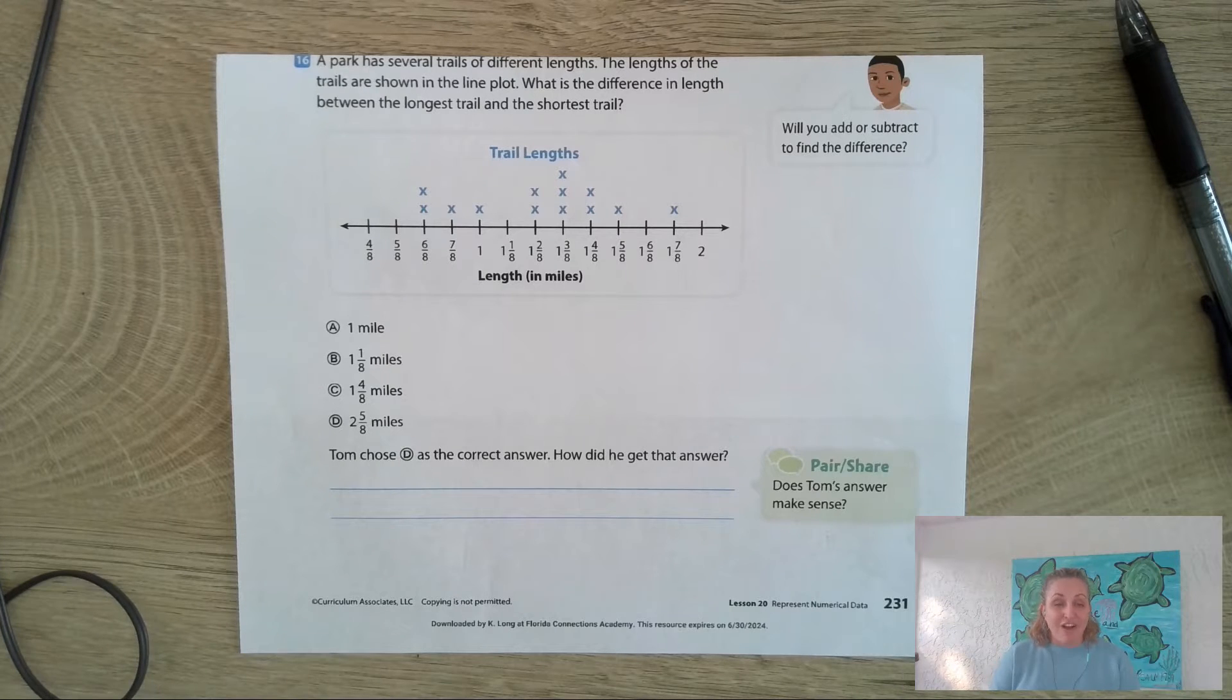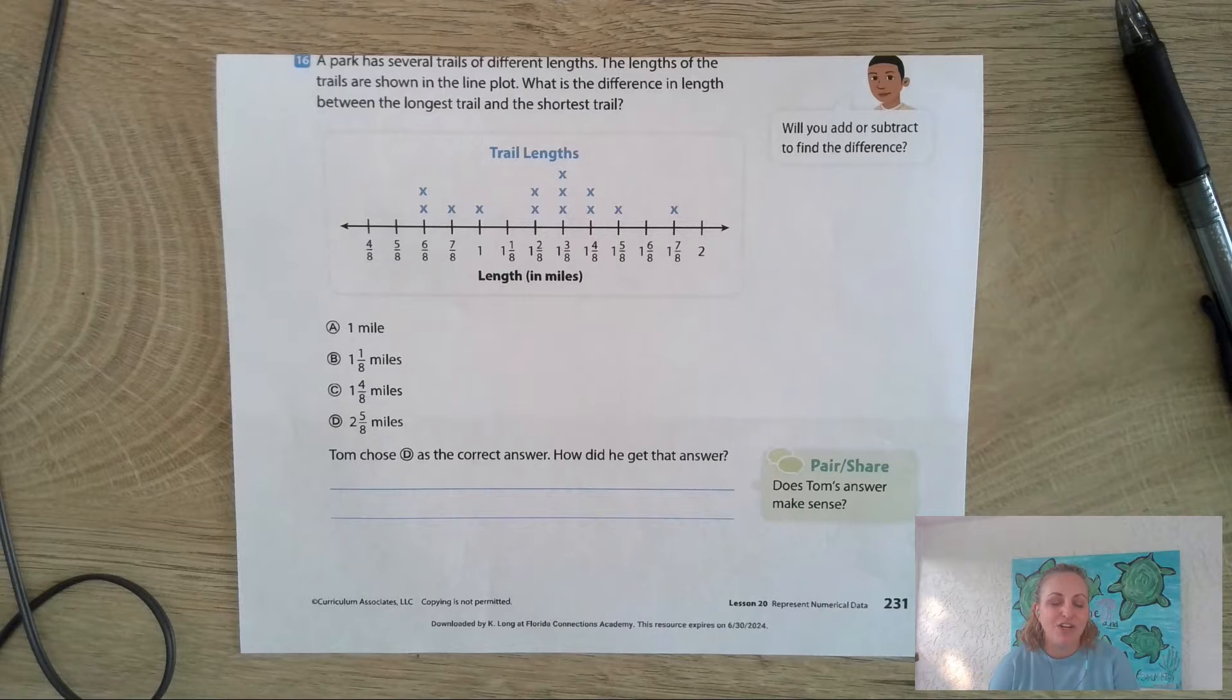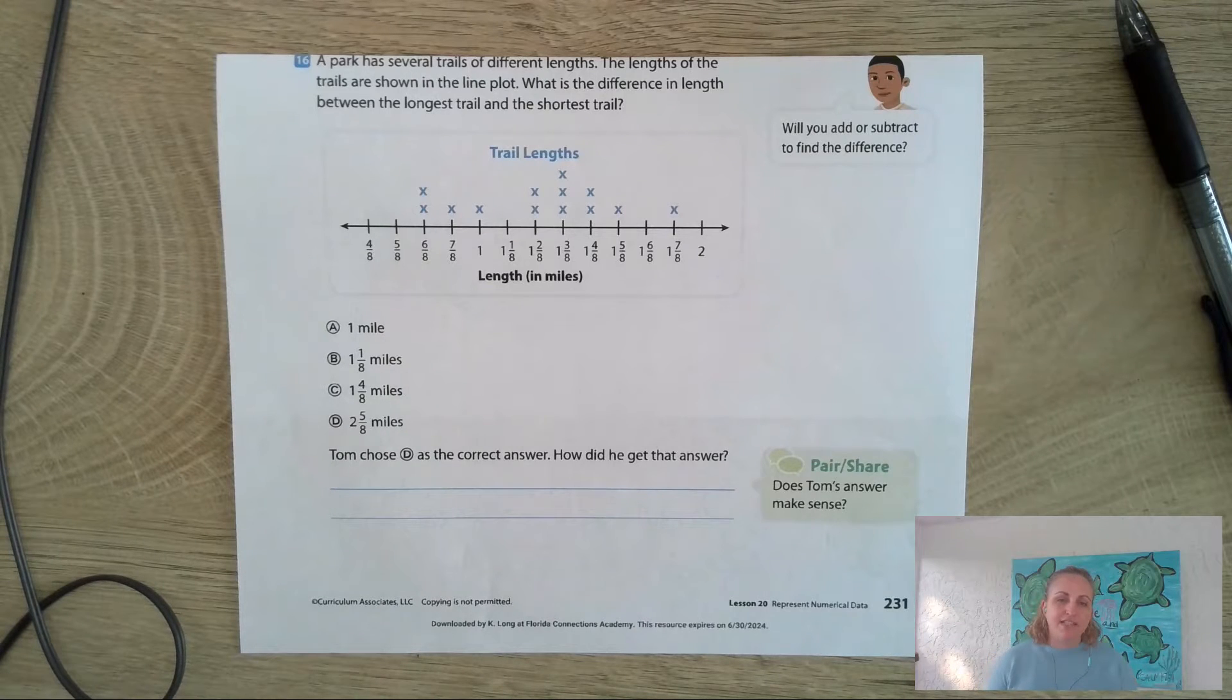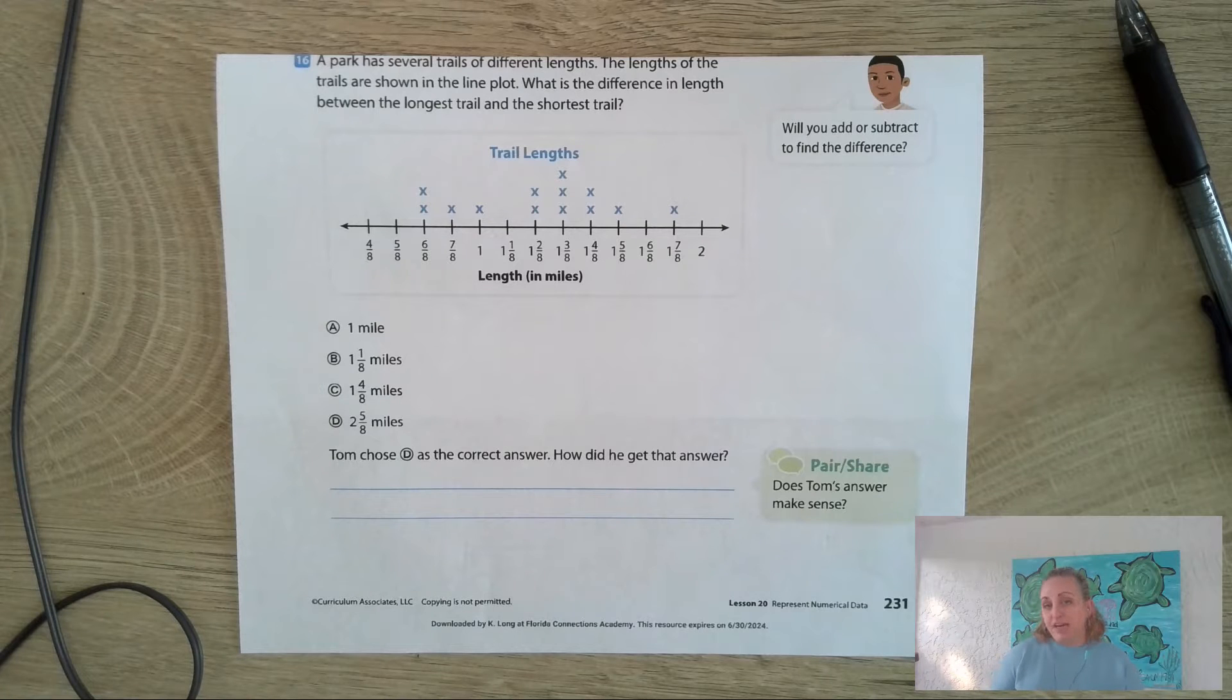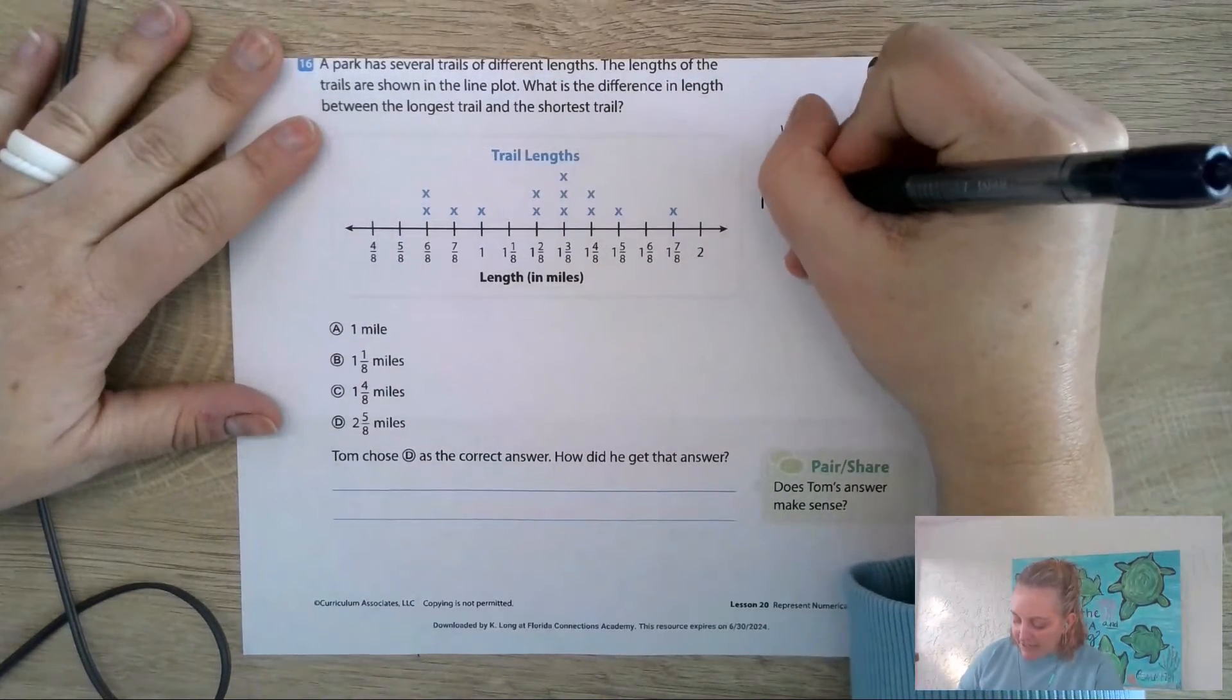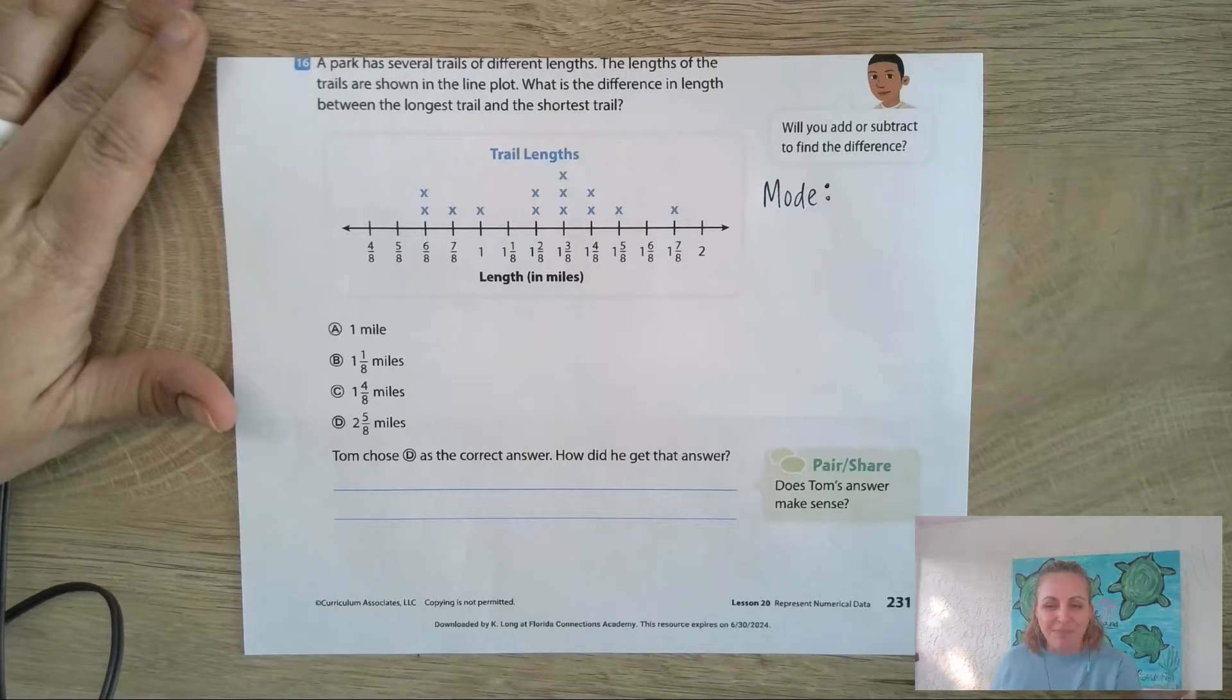Let's take a look at this line plot. We've actually seen this line plot before in an earlier lesson, but we are now going to find the median, mode, and range. This is the line plot that has the different trail lengths. What we are going to do is use the line plot to find the median, the mode, and the range.